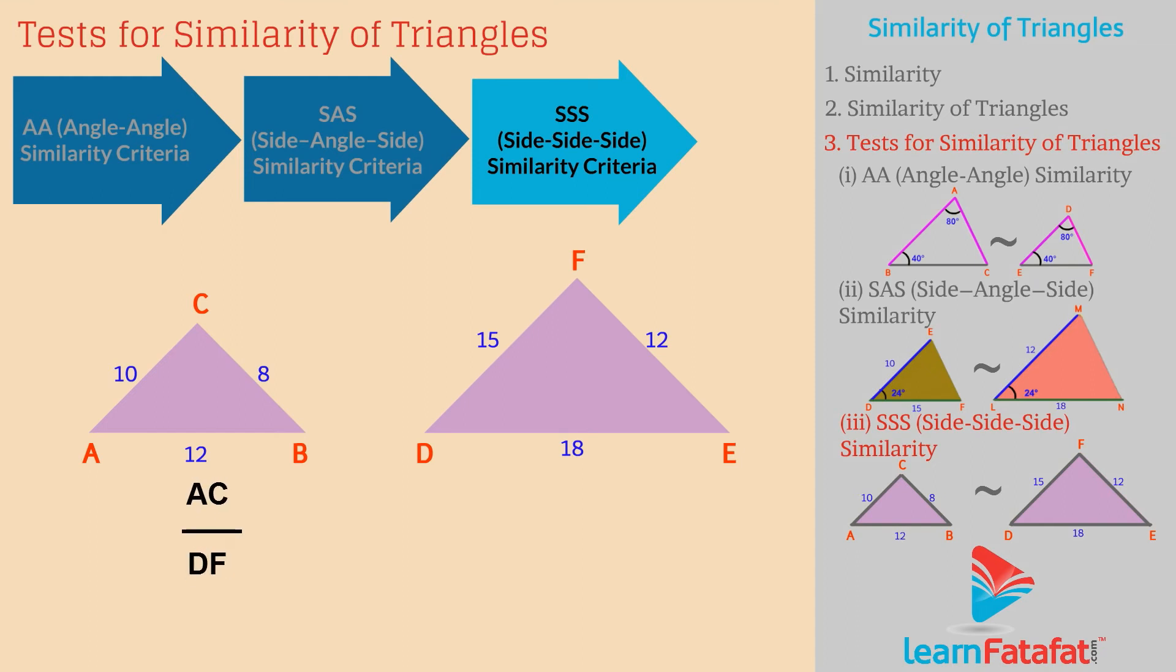For example, in the given example AC divided by DF is equal to AB divided by DE is equal to BC divided by EF, which is equal to 2 divided by 3. Therefore, triangle ABC is similar to triangle DEF.